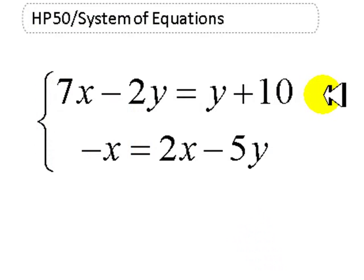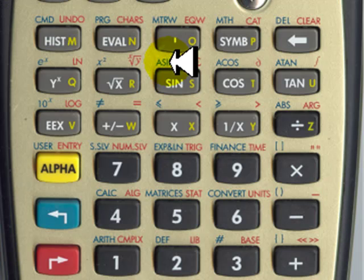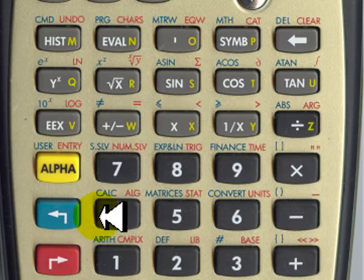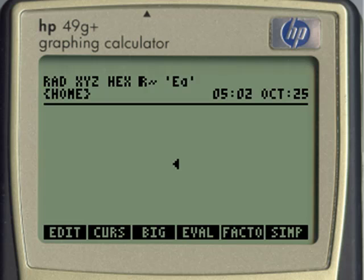Now we want to solve this system of linear equations. Two equations and two unknowns, x and y. In the calculator, we go to the equation writer. In here, equation writer. And we type the first of the equations.